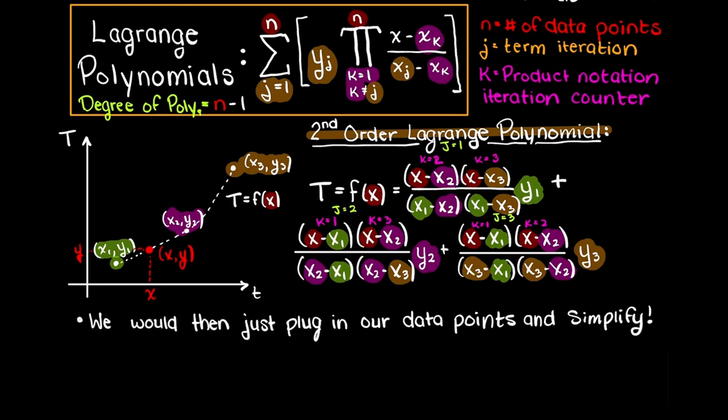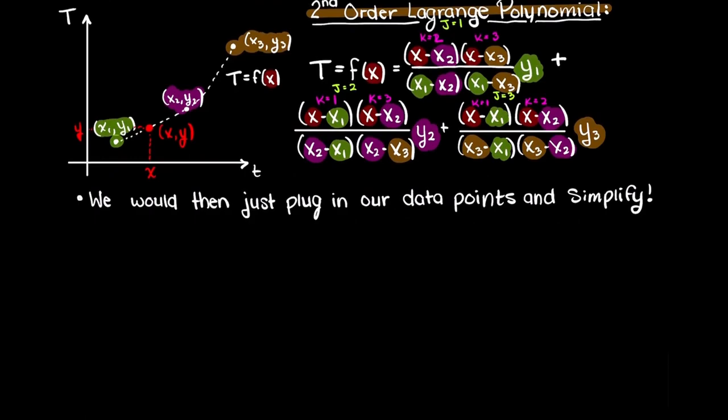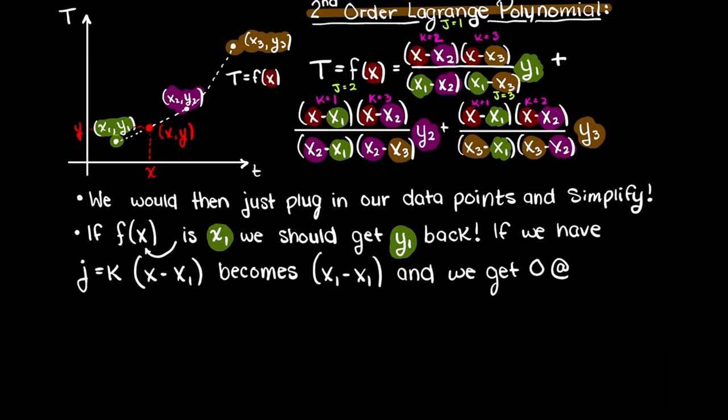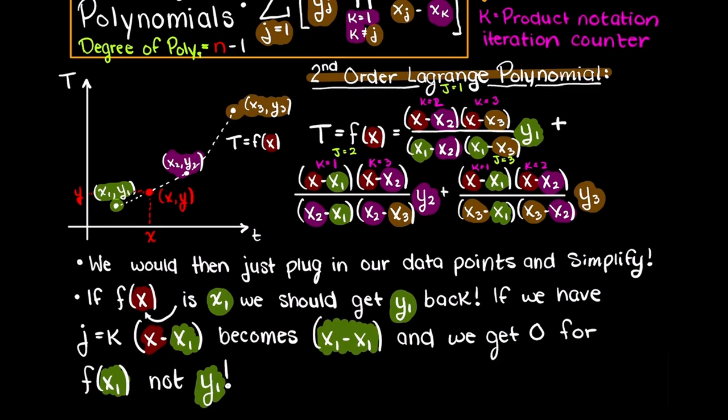That is all we need to do other than plugging in our variables and simplifying. I mentioned that it makes sense to leave out k equals j — but why? As interpolation functions need to go through all the data points we give it, if we gave it an input of x1 and x minus x1 is present, terms 2 and 3 go to 0 since x1 minus x1 gives 0. Then we are just left with the first term where x1 minus x1 again gives 0, whereas we know the answer should be y1. This is why we remove terms where k equals j.